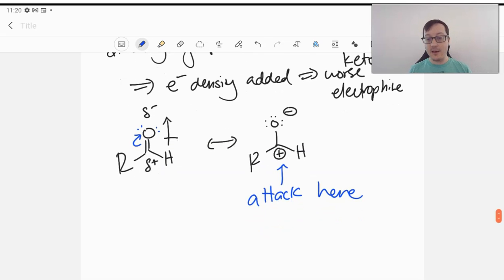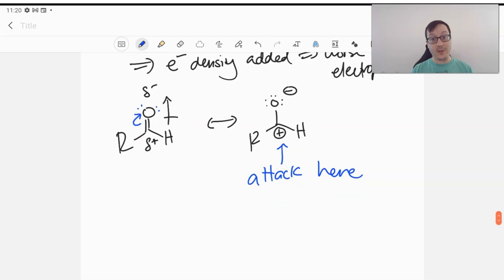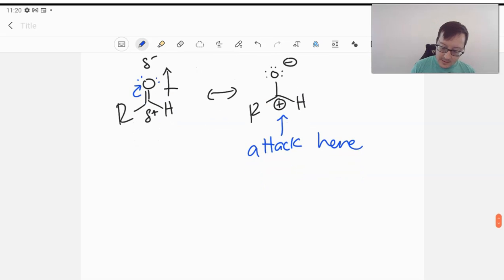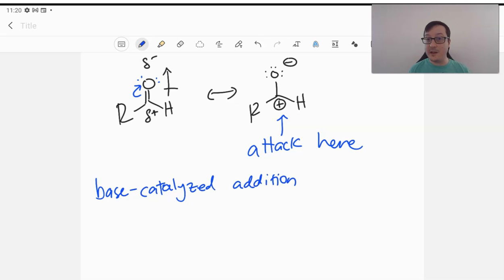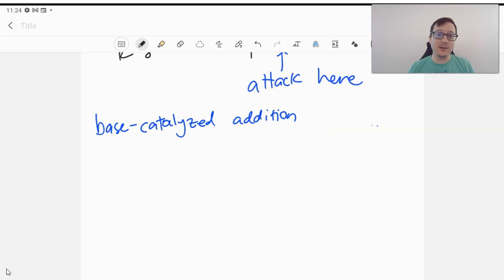In terms of nucleophilic attack, we're going to have two conditions that we're going to be very consistent with our mechanisms with throughout this chapter and the proceeding ones. We can generally have a base-catalyzed mechanism, base-catalyzed addition. This will be a nucleophilic addition to a ketone or aldehyde, and that might look something like this. Pretty simple mechanism.